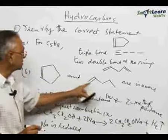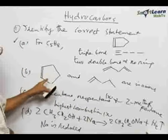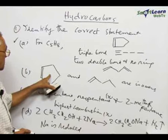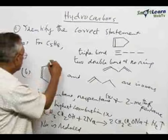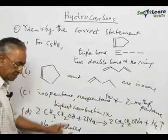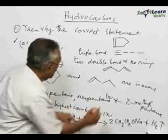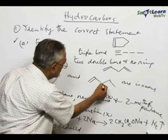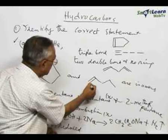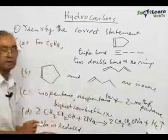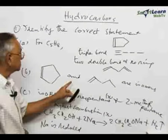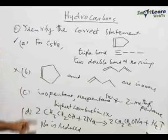When we come to the second statement, these two compounds are not isomers. Cyclopentene has the formula C₅H₈, while 1-pentene has the formula C₅H₁₀ — counting the carbons and hydrogens confirms they differ. Therefore these two compounds are not isomers, and statement B is not correct.